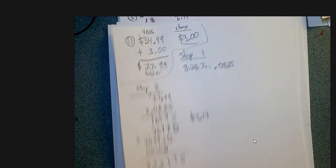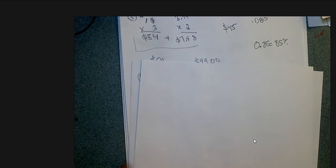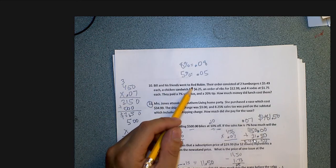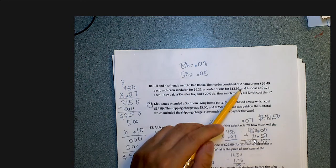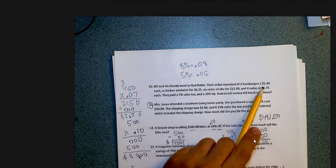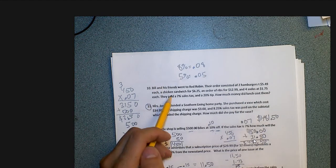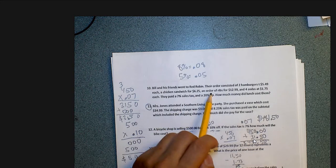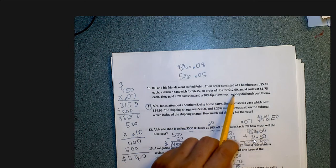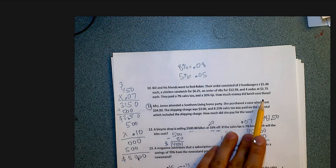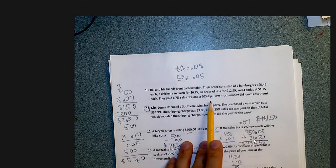That was number 11. Now I'm going to go on to problem 10, which looks a little bit long. Problem 10 reads: Bill and his friends went to Red Robin — that's in the Tucson Mall. Their order consisted of 2 hamburgers at $5.49 each, a chicken sandwich for $6.25, ribs for $12.99, and 4 sodas at $1.75 each. They paid 7% tax and a 20% tip. How much did this cost them? So let's figure out the subtotal.